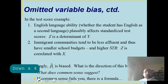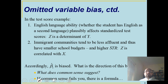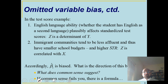In the test score example, we use data from California — 420 districts, as used in Introduction to Econometrics by Stock and Watson. In California, there are many immigrants, particularly from Mexico, who are non-native English speakers. English language ability matters a lot in test scores for grades 1, 2, and 3, meaning English language ability affects test score.